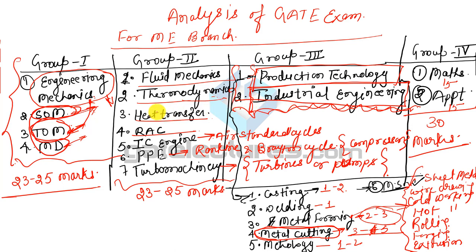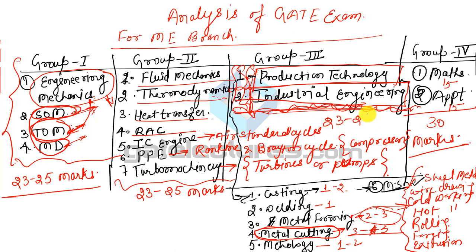Questions in Production Engineering are directly based on numericals and formulas — you put in the formula and find the answer. Production Engineering and Industrial Engineering together also contain 23 to 25 marks in GATE exams.